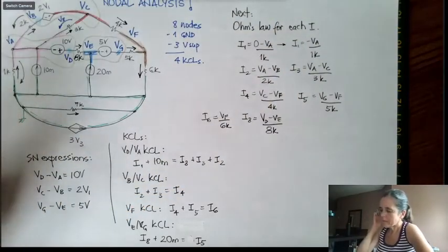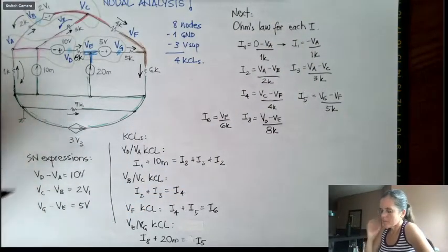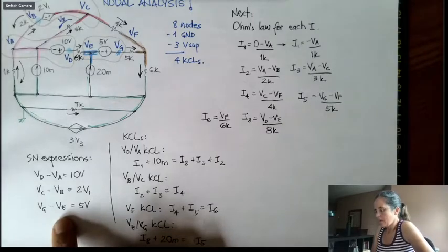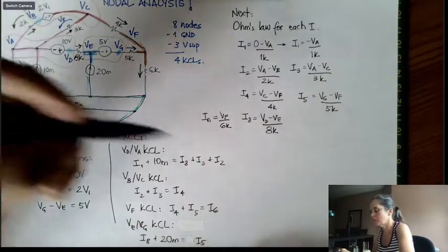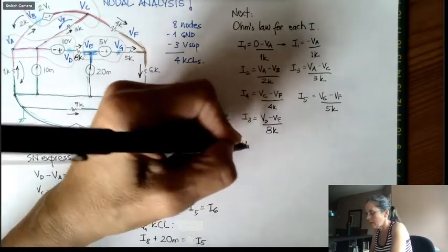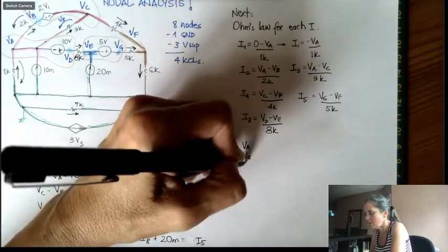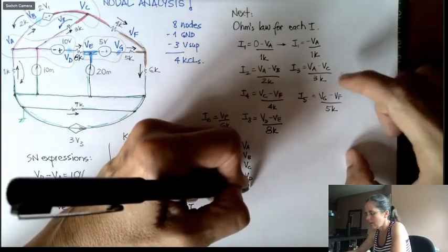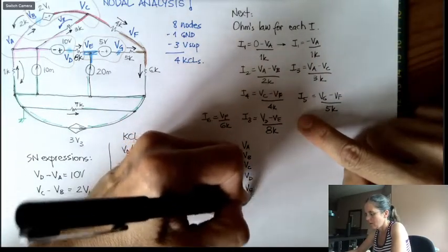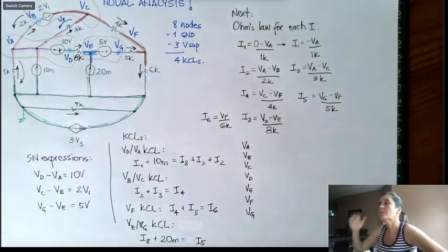So now what happens is that we have A, B, C, let me write here maybe. VA, VB, VC, VD, VE, VF, and VG as variables.